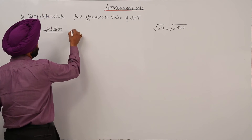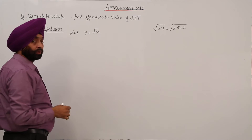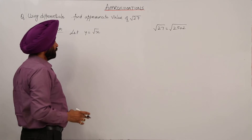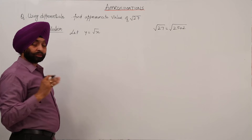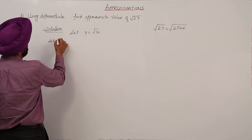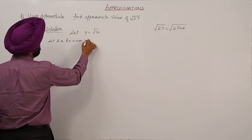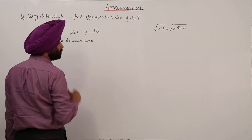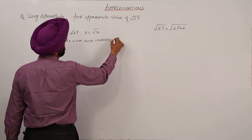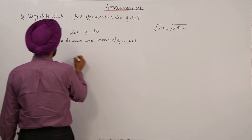Now let y be equal to under root x. Let delta x be a non-zero increment of x, and delta y be the corresponding increment of y.